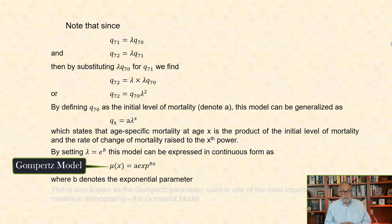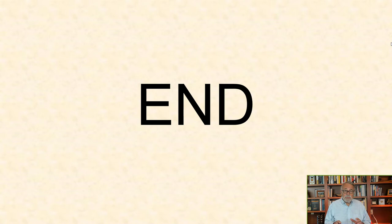This ends Module 3.4, but sets the stage for Module 3.5, where I describe a number of different mortality models used in demography, including the Gompertz model.